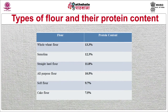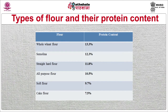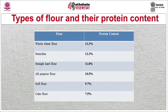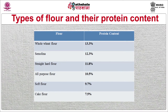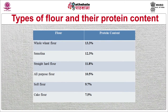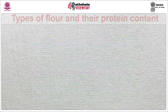Now we discuss the types of flour and their protein content. Whole wheat flour: 13.3%; semolina: 12.3%; straight hard flour: 11.8%; all-purpose flour: 10.5%; soft flour: 9.7%; and cake flour: 7.5%.